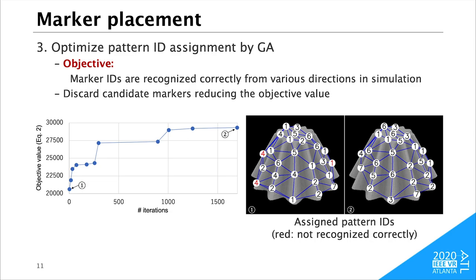We then optimize the pattern ID assignment to the candidate markers. The objective is that the marker ID recognition robustly works for various viewing directions. We apply genetic algorithm to the optimization, where the array of pattern IDs is a chromosome. We discard candidate markers if they reduce the objective value. For more details of the optimization, please refer to the paper. The figure shows the result. In the beginning of the optimization, some markers are not recognized correctly in the simulation. After sufficient evolutions, all the markers are recognized correctly by the optimized pattern IDs.